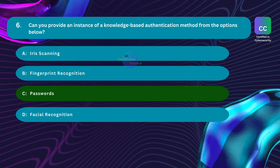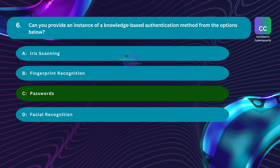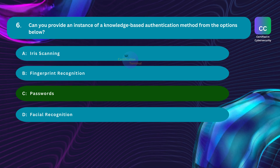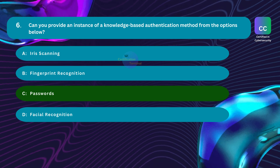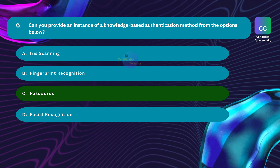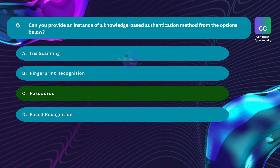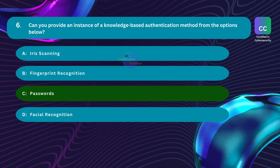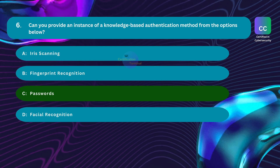Knowledge-based authentication relies on information known only to the user, exemplified by passwords — confidential combinations of characters shared solely between the user and the system to verify identity. Option A, iris scanning, is a biometric authentication method dependent on physical attributes, not knowledge. Option B, fingerprint recognition, is a form of biometric authentication reliant on a user's physical attribute. Option D, facial recognition, uses the distinctive physical traits of a user's face rather than information they know.